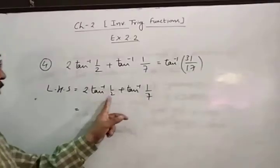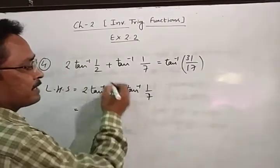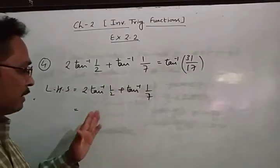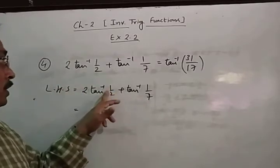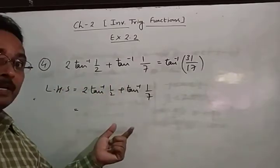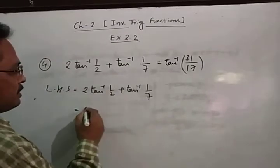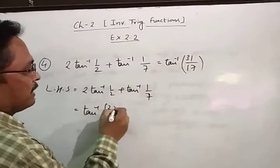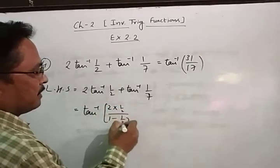The property 2tan⁻¹x = tan⁻¹(2x/(1−x²)) applies when x lies between −1 and +1. Since 1/2 satisfies this condition, we can write 2tan⁻¹(1/2) = tan⁻¹(2x/(1−x²)).